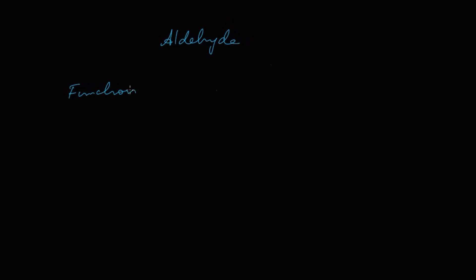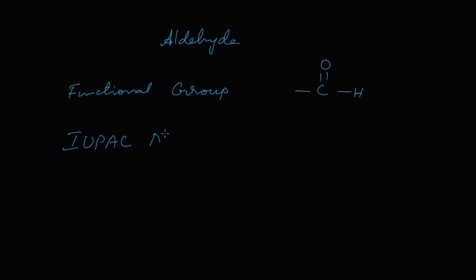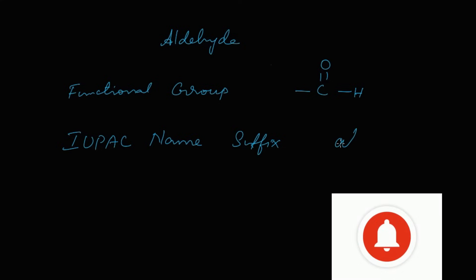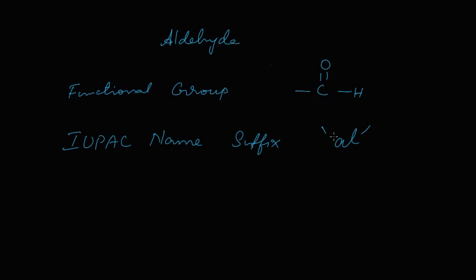The functional group of aldehyde is C double bond O-H, that is CHO. In the IUPAC name, the suffix — the ending word — will be AL.